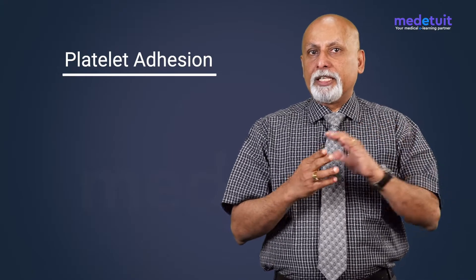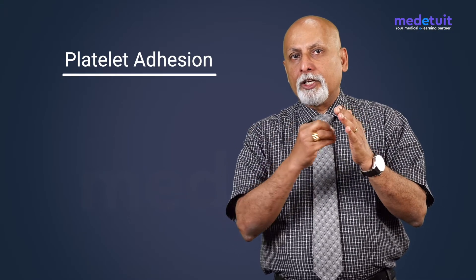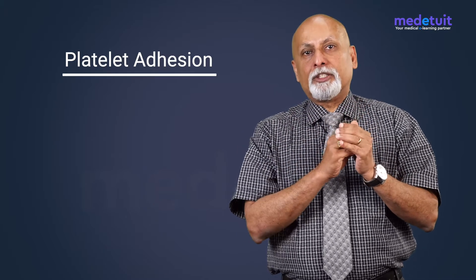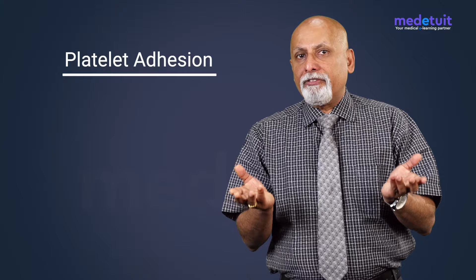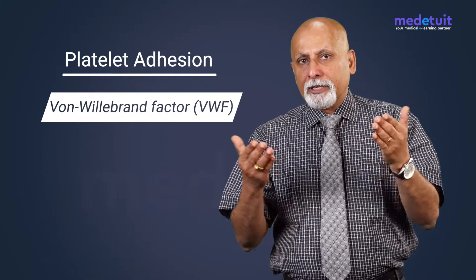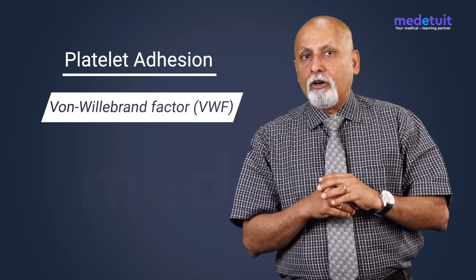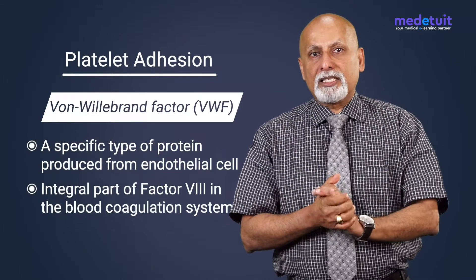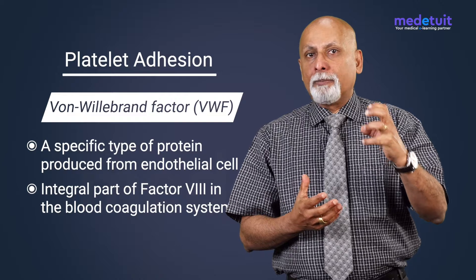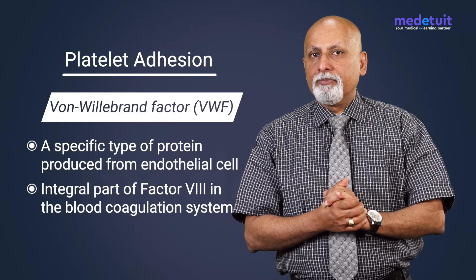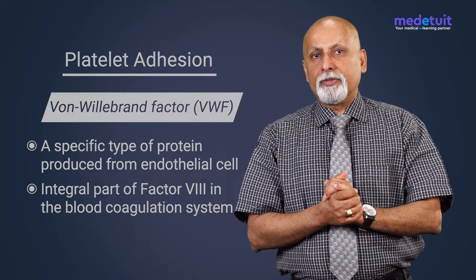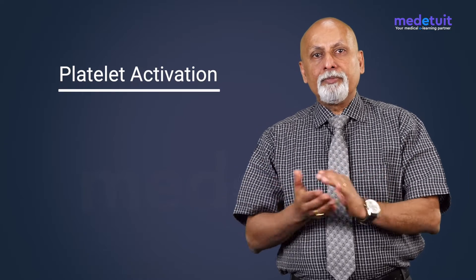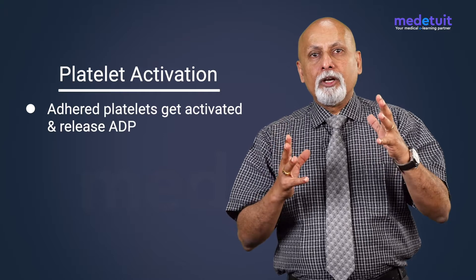Because of certain specific receptors, as we discussed in the structure, the platelets come in contact with collagen and get adhered to it. To bridge the gap, a specific protein is needed — that protein is called von Willebrand factor, which is produced from endothelial cells and is an integral part of factor eight in the coagulation system. After this adhesion, the platelets change their shape and become activated.